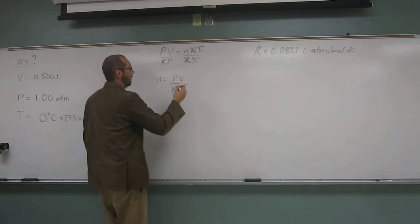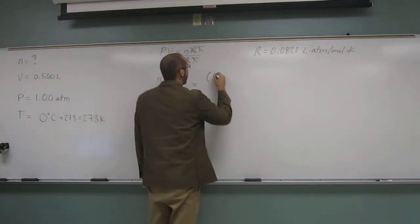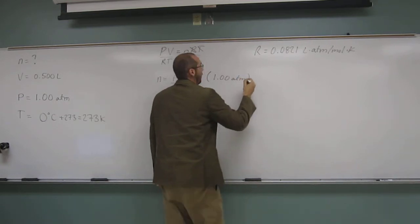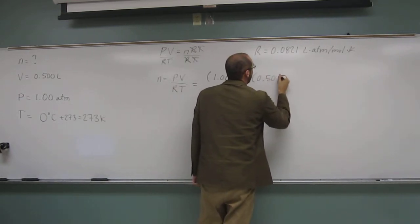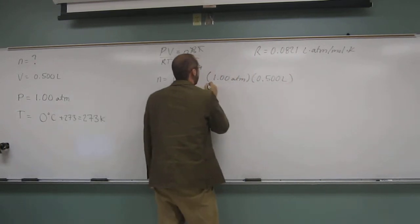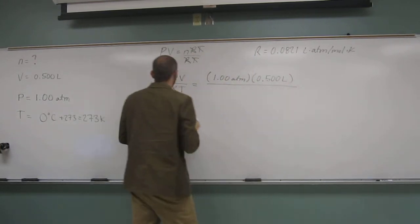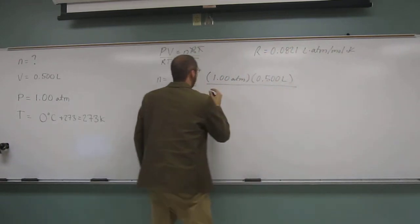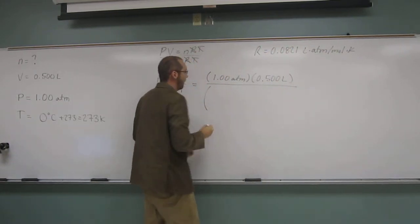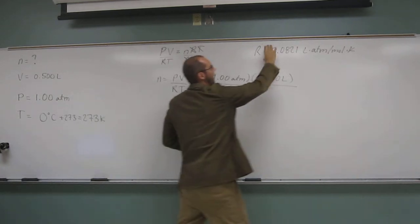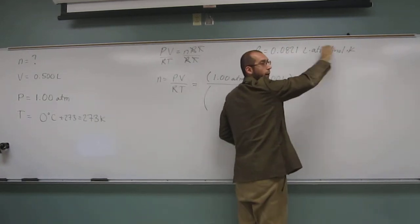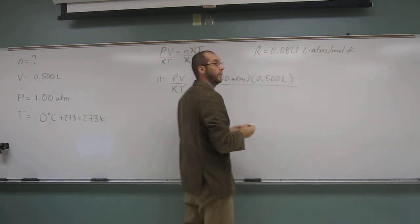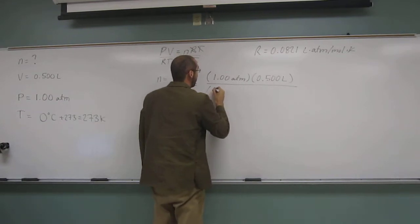So, now it's just really a plug and chug problem. Okay, so the pressure is 1.00 ATM. The volume is 0.500 liters. And we're going to divide that by R. And I like to make my R big. So, this is kind of the shorthand way of writing it. I'm going to make it to where this stuff is actually underneath that so you can see what I'm doing. So, we can really cancel out the units here.